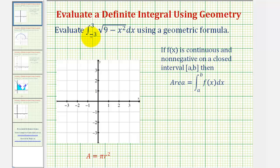In this question, we're asked to evaluate the definite integral using a geometric formula. If a function f(x) is continuous and non-negative on a closed interval from a to b, then the area under the function and above the x-axis is equal to the definite integral of f(x) from a to b.